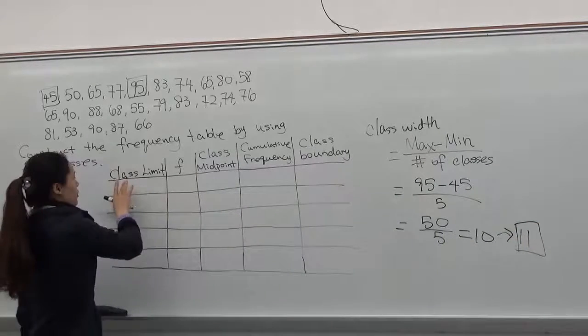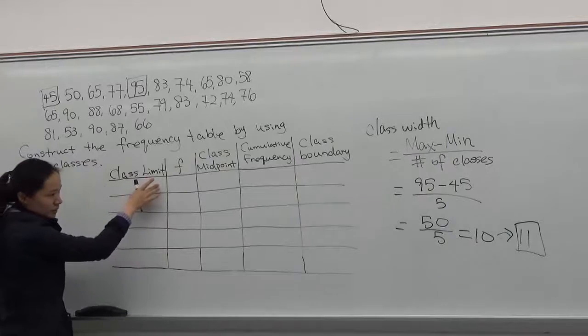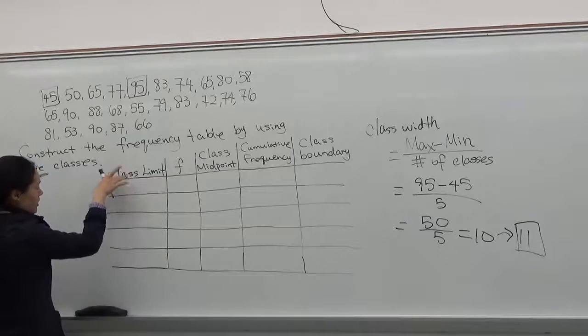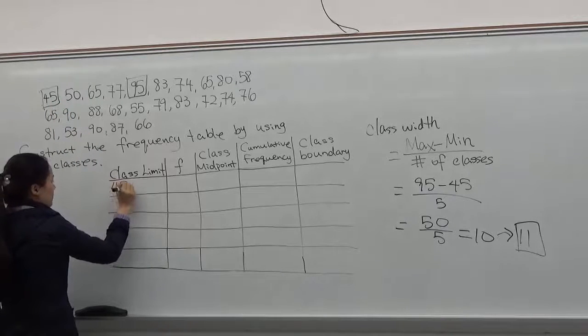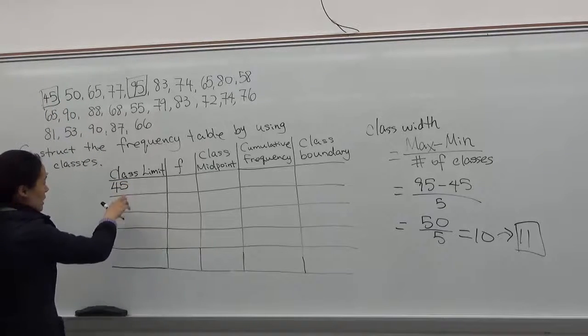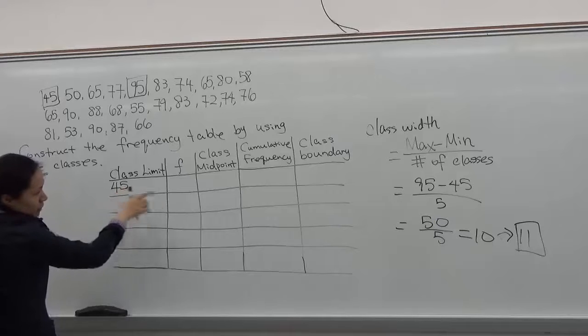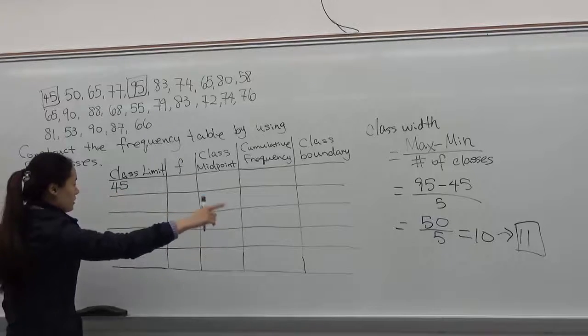Now we'll start with the lower class limit and upper class limit. The lower class limit of the first class, you have to start with the smallest number you have. That's 45. And you have to add 45 plus the class width we found. That's 11.